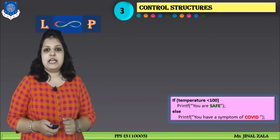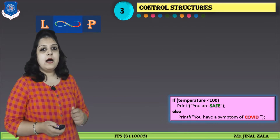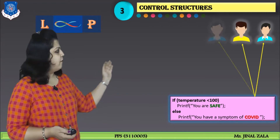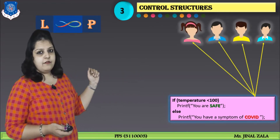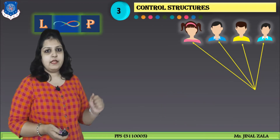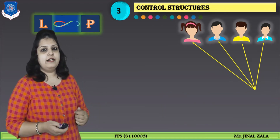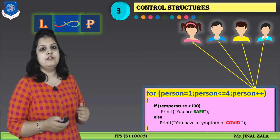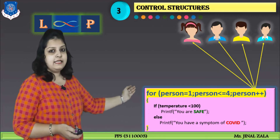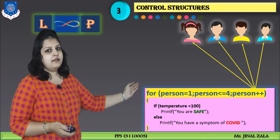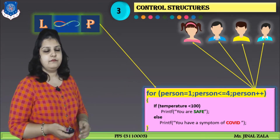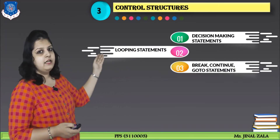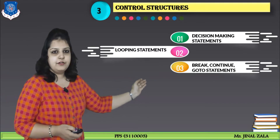By using this code, we can check the temperature of only one person. But if you want to check the temperature for many more persons — like here you can see four persons — then we have to use a loop. What is a loop? A loop is used for repetition. If you want to do any task in a repetitive form, we have to use a loop. Here in this code you can see a for loop used in this way. In this module, we will discuss different decision-making statements, looping statements, break, continue, and goto statements in detail.